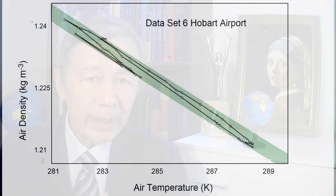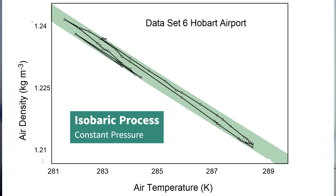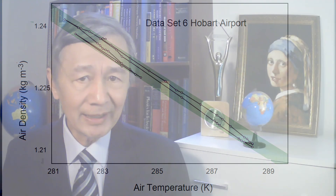Here is another plot of air density versus air temperature near the surface. Compared with other diagrams I have shown so far, the daily variation in air pressure is larger than usual, indicating a more apparent weather change. Still, the reciprocal dependence of air density on air temperature can be seen whenever the air pressure becomes temporarily constant. This implies that the Earth prefers a stable air pressure near its surface.